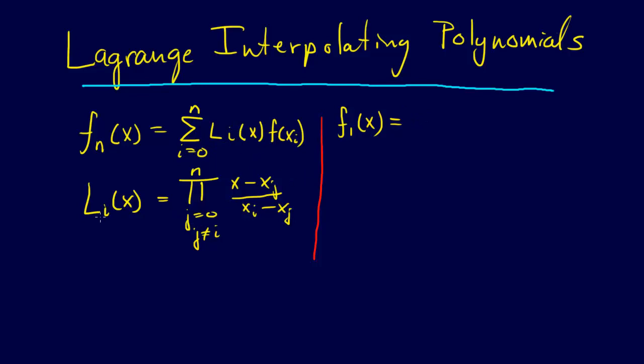So L0 of x times f of x0, plus L1 of x times f of x1. That's what we're going to have.